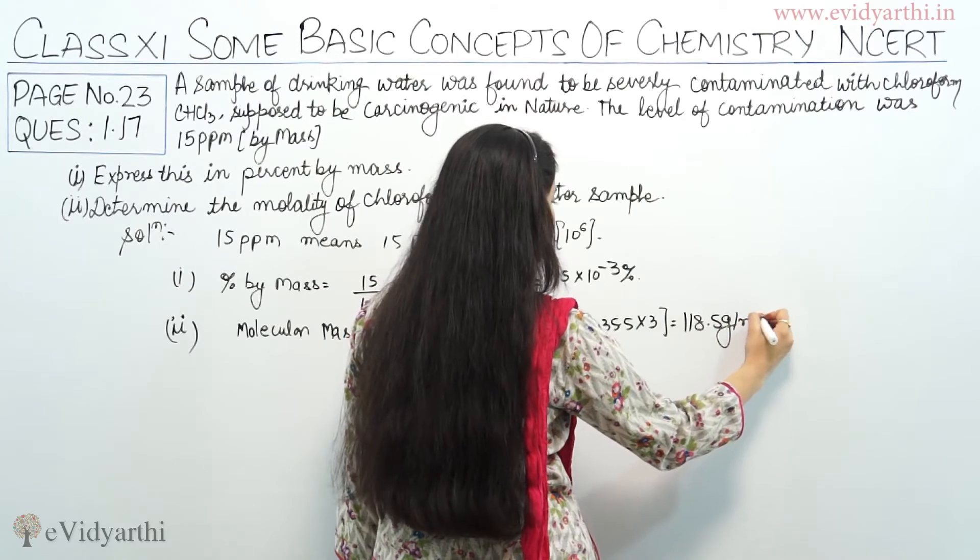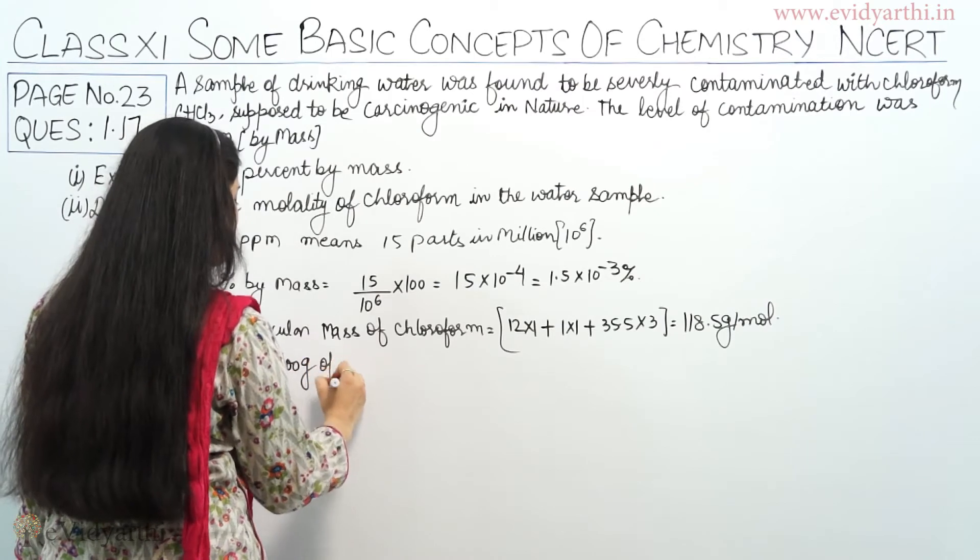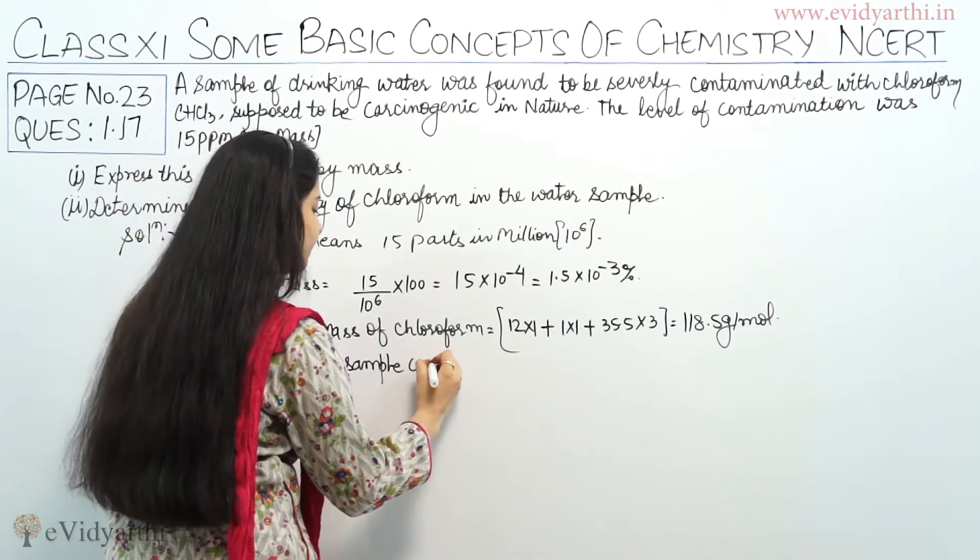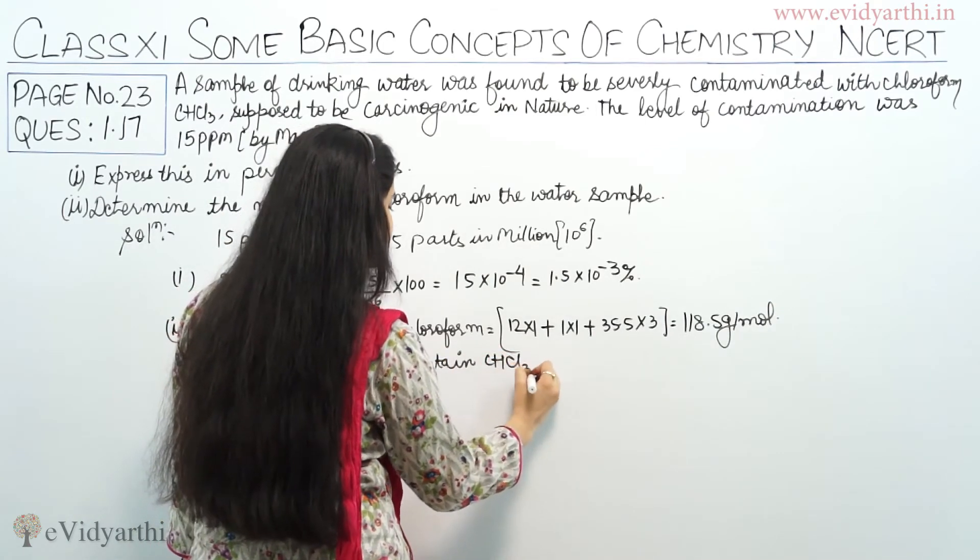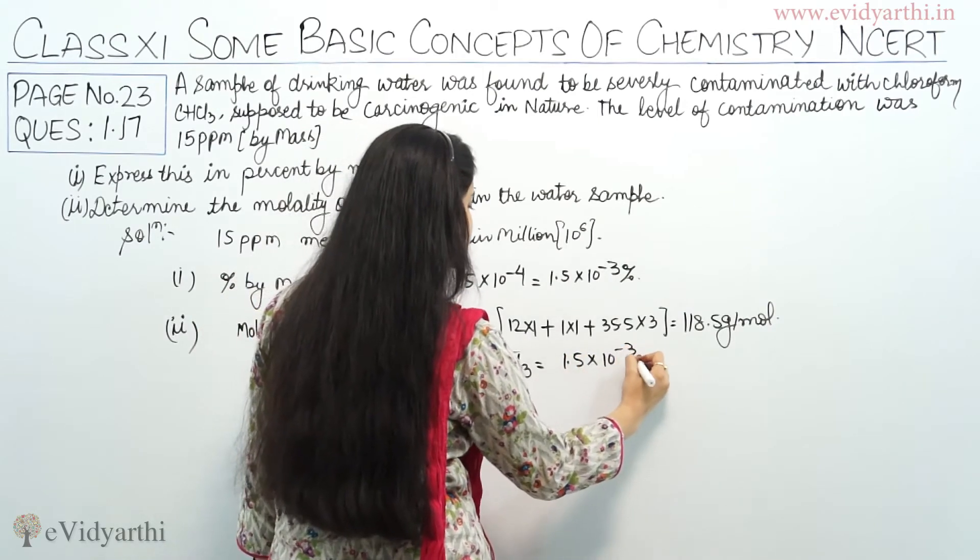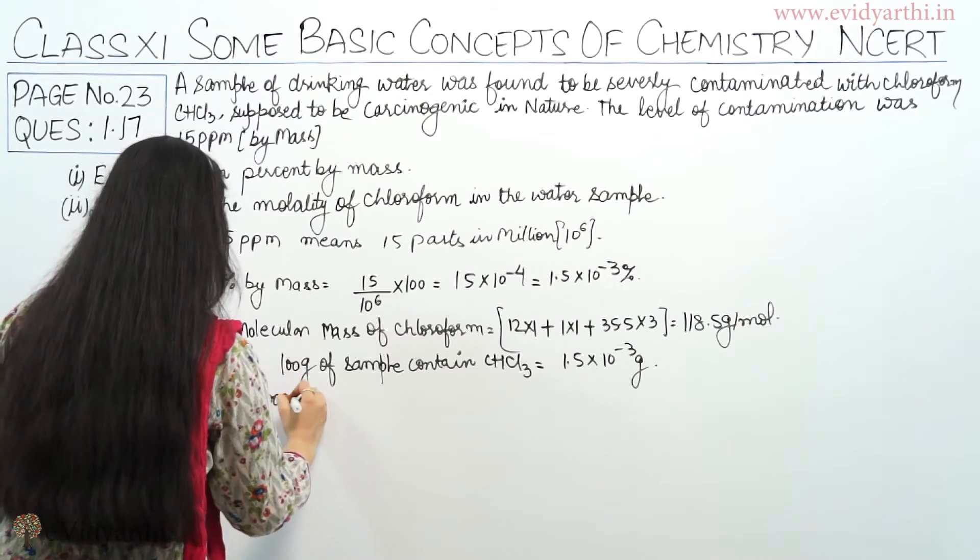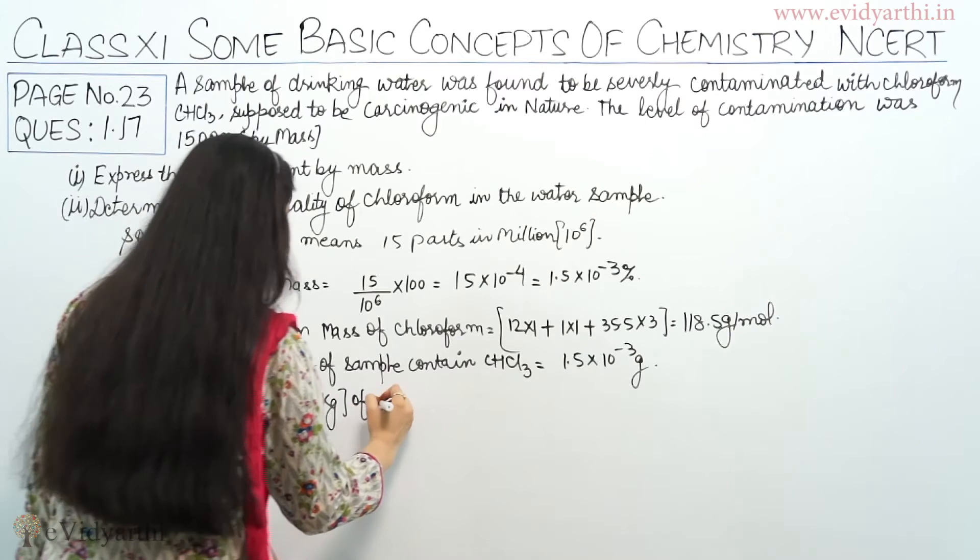Now we know that 100 gram of sample contains chloroform CHCl3 equals to 1.5 into 10 raised to power minus 3 grams.